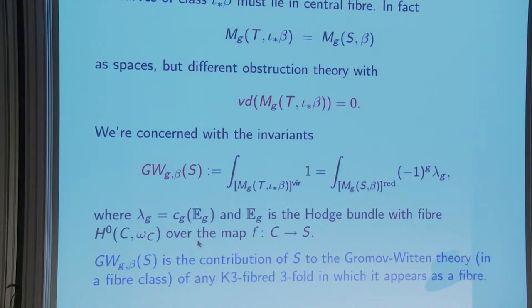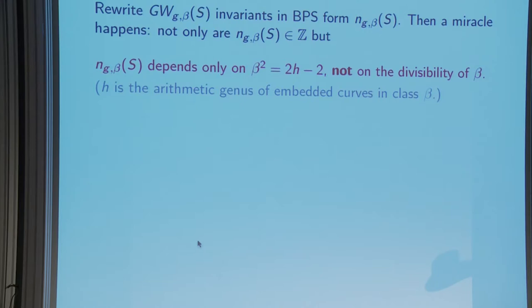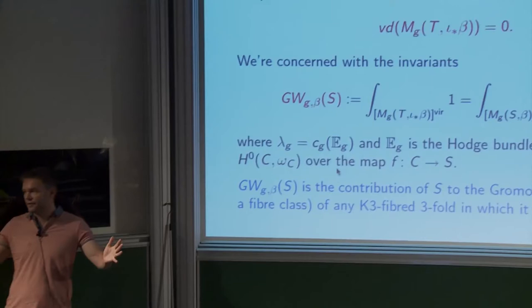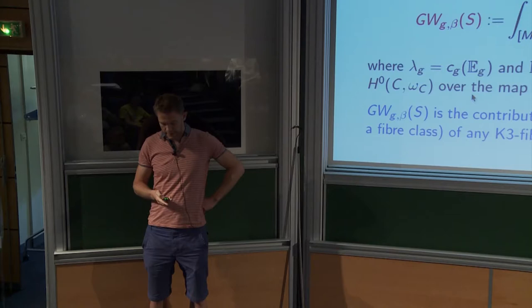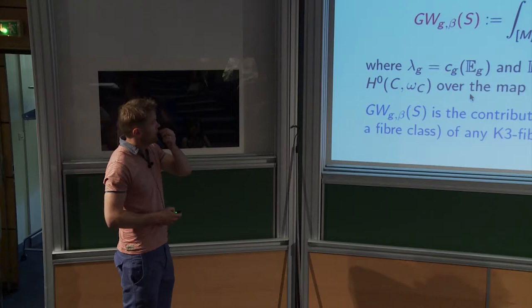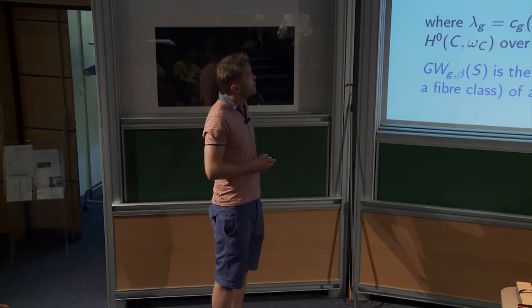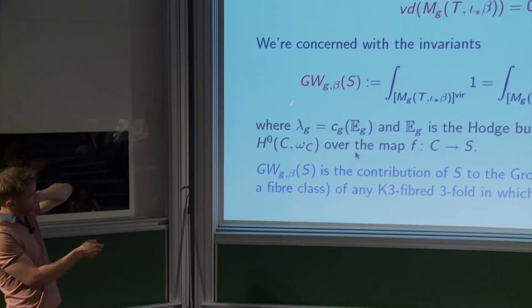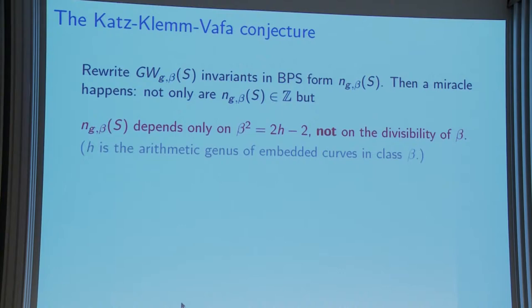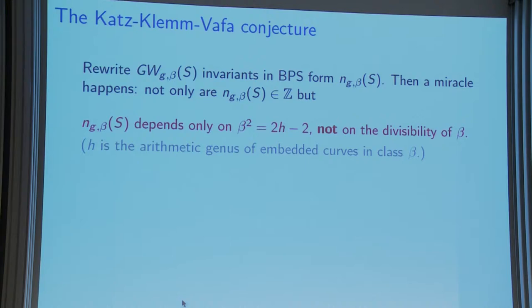These are the Gromov-Witten invariants we think of as belonging to the K3 surface, but really they're the contribution of how this K3 surface contributes to the fiberwise Gromov-Witten theory of threefolds. They're really threefold invariants. For now it's a non-compact threefold, something like the twistor threefold of the K3. So what's the Katz-Klemm-Vafa formula for these invariants? I rewrite them in BPS form by universal formulae, so these are rational numbers conjectured to be integers.